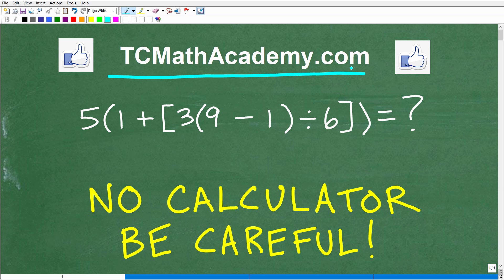We're going to need to be extra careful because I want you to do this problem without the aid of your calculator. So what is the problem? We have 5 times 1 plus 3 times 9 minus 1, all that divided by 6. What is this equal to?